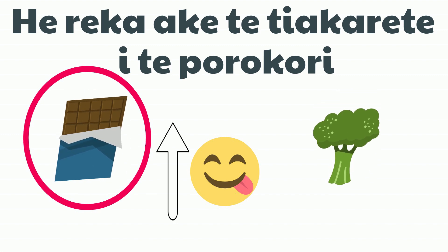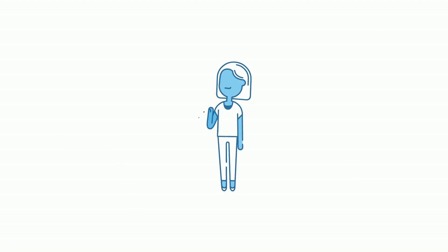There you have it. Now you know how to compare one thing to another in Māori. Ka kite!